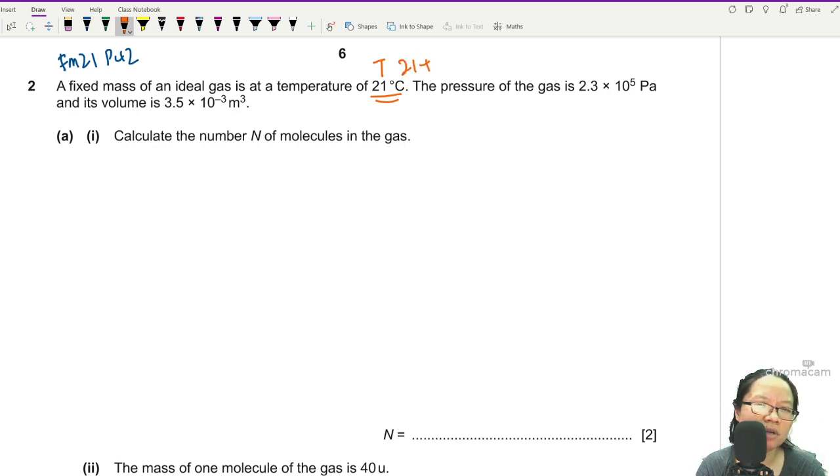Immediately when I see this I'm like, change to Kelvin: 21 plus 273, just in case I forget. Okay, this is pressure, this is volume. Calculate the number of molecules in the gas.